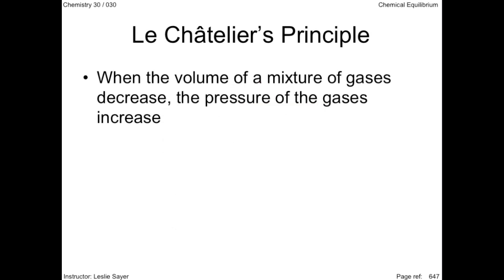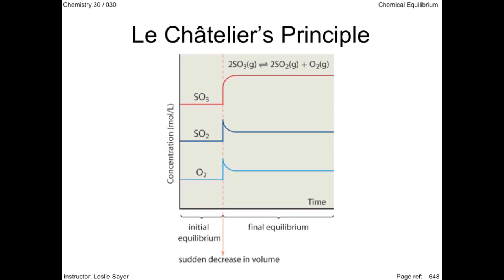When the volume of a mixture of gases decrease, the pressure of the gases increase, and this is in agreement with Boyle's law. Consider the reaction of sulfur trioxide into sulfur dioxide and oxygen. The decrease in volume momentarily increases the concentration of the gases. Over time, notice how the reaction appears to shift left, that is increasing the sulfur trioxide.